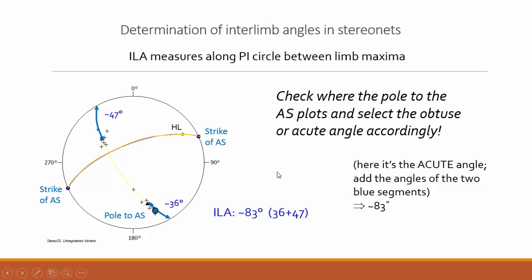Take all this as an example — your exercise today and any folds you analyze in the field may be differently oriented. But the principle is: plot the limb readings, produce the hinge line from the pi circle, and using the strike of the axial surface obtained from field or map work, produce the axial surface by fitting the strike with the hinge line on one great circle. Then plot the pole to the axial surface, which helps you decide which segments along the pi circle to measure as the interlimb angle. You must show up to the assignment — good luck with your practical.